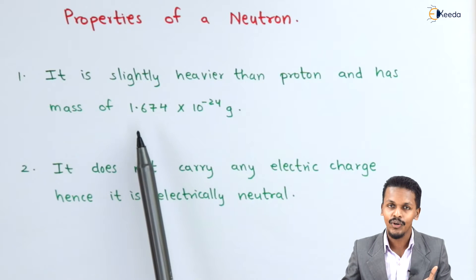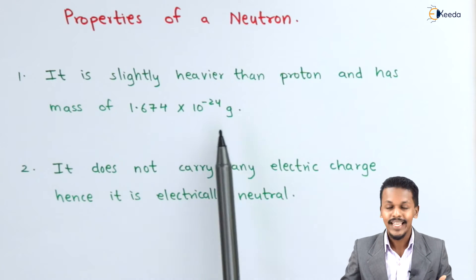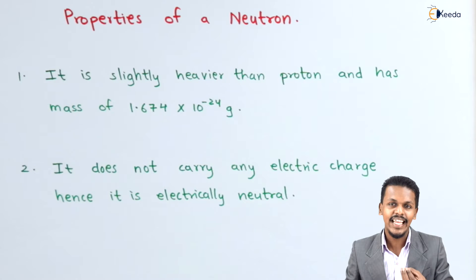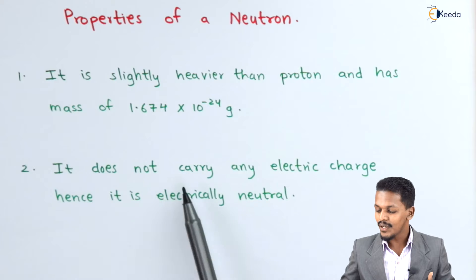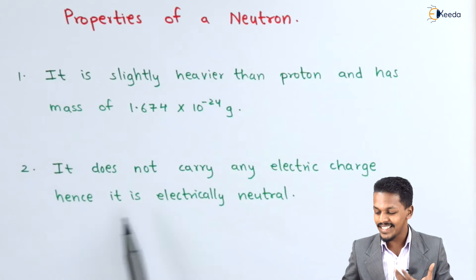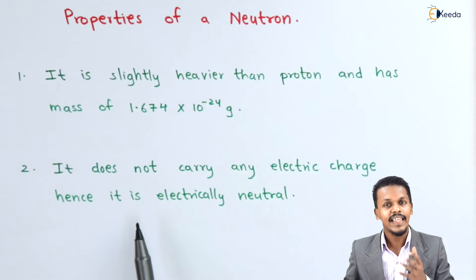The mass of the neutron is 1.674 × 10⁻²⁴ gram, so it is slightly heavier than the proton. The next point is that it does not carry any electric charge, hence it is electrically neutral.